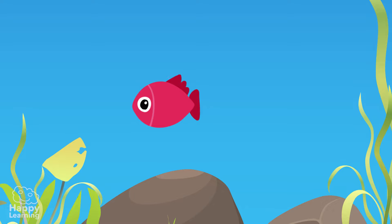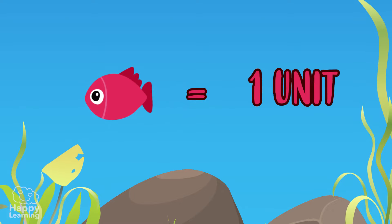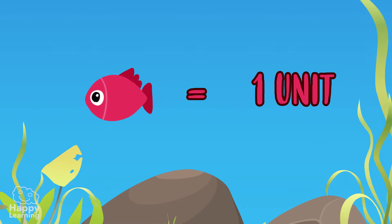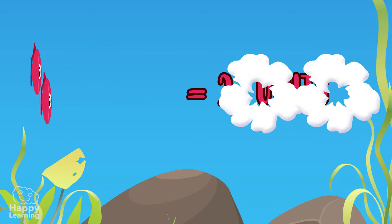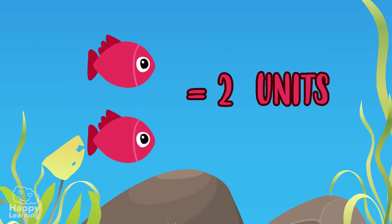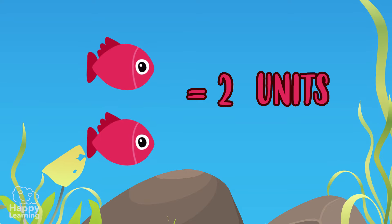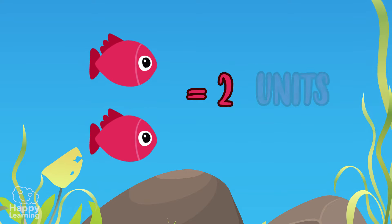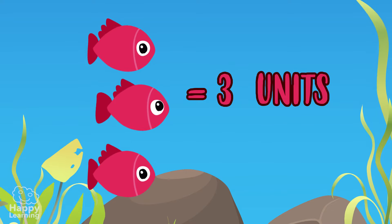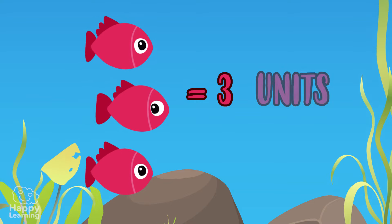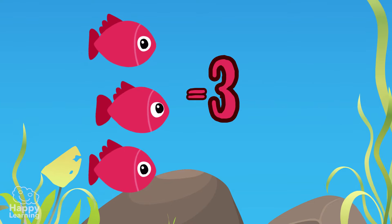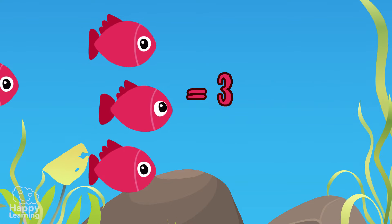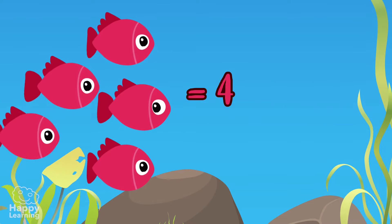One fish is equal to one unit. So if we have two units, we represent them with the number two. Three units with the number three. And so on, up until the number nine.